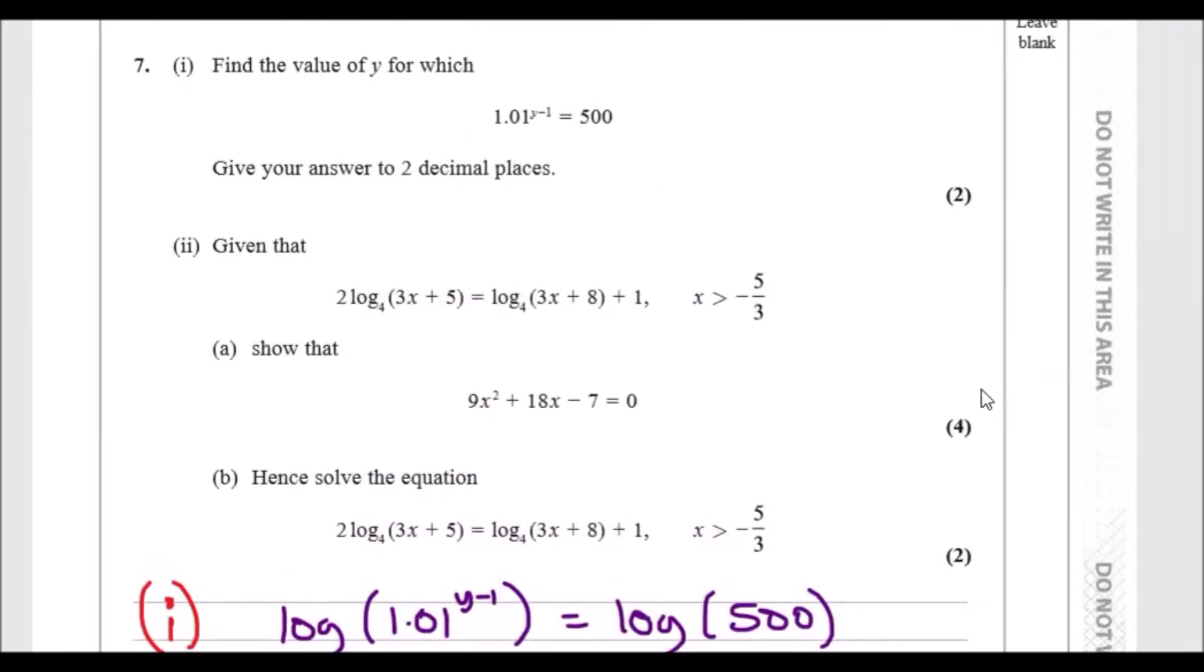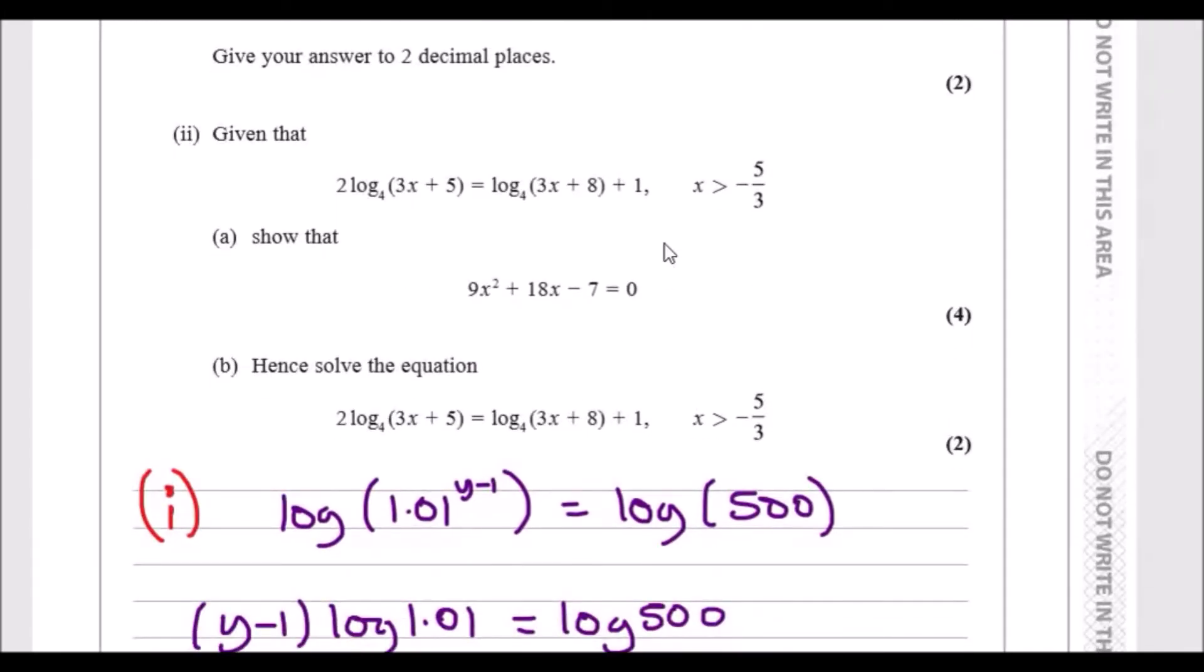Looking at the equation, we have a fixed domain. This tells us that x needs to be greater than -5/3. The logic behind this is that we cannot have a negative value inside the logs. Just like square root functions, this means that the minimum value has to be bigger than zero.